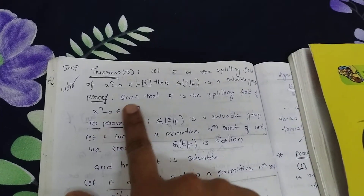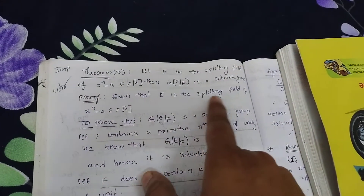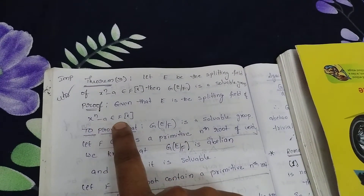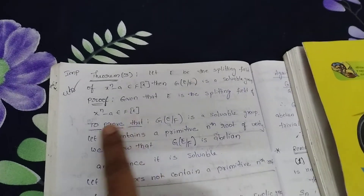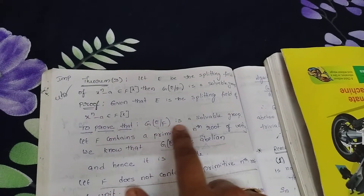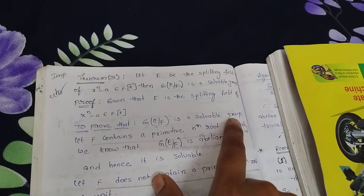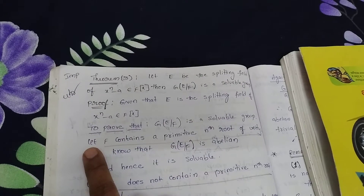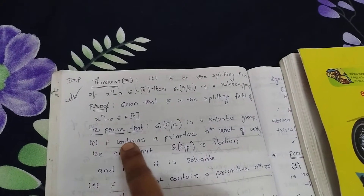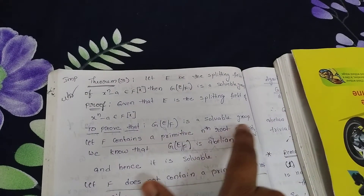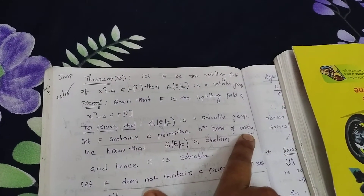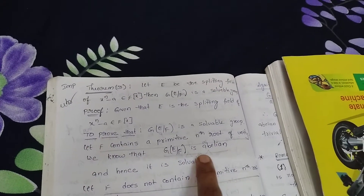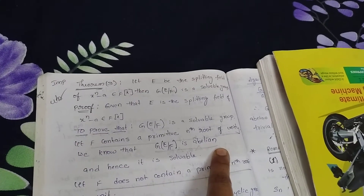Proof: Given that E is a splitting field of x^n minus a, belonging to F[x]. We need to prove that G(E/F) is a solvable group. Let F contain a primitive nth root of unity. If F contains a primitive nth root of unity, then G(E/F) is abelian.